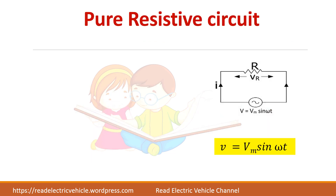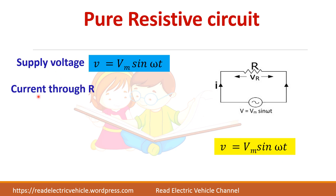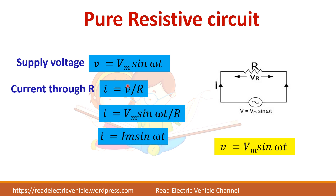Next we will analyze a pure resistive circuit. We are applying an AC voltage to a pure resistance — meaning it doesn't have any inductance or capacitance, only resistance. The supply voltage is given by V = Vm sin(ωt). The current through this resistor IR is given by Ohm's law: I = V/R = Vm sin(ωt) / R. So we can write it as I = Im sin(ωt), where Im = Vm / R.